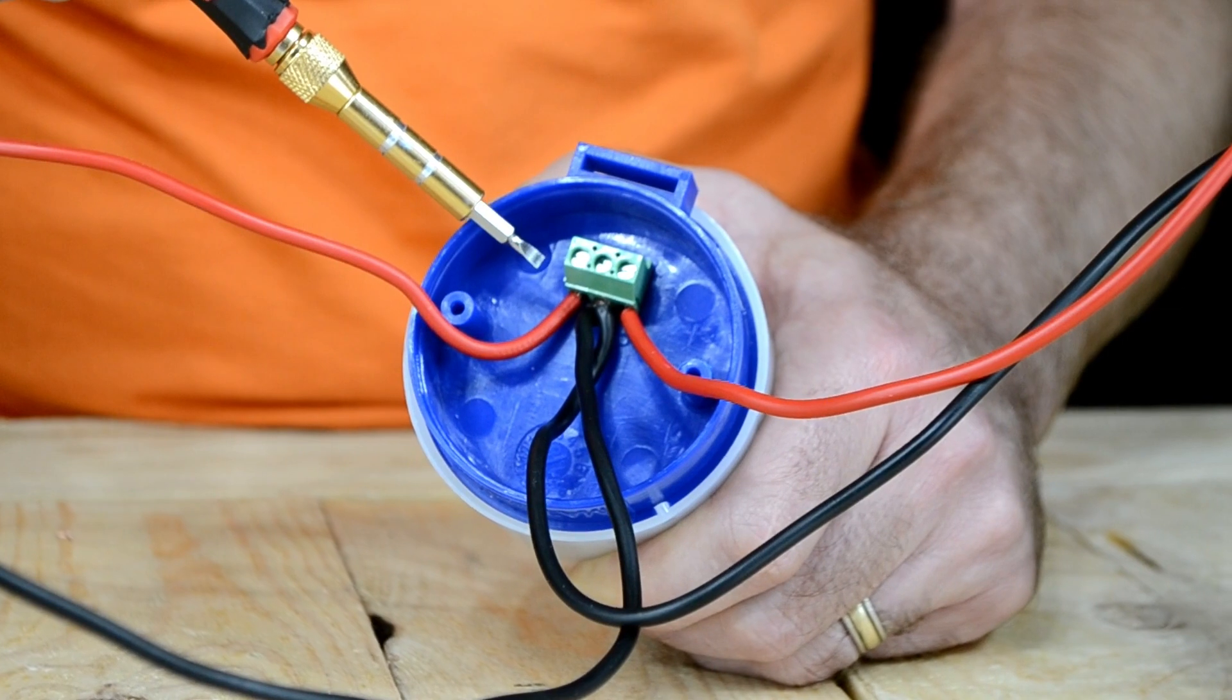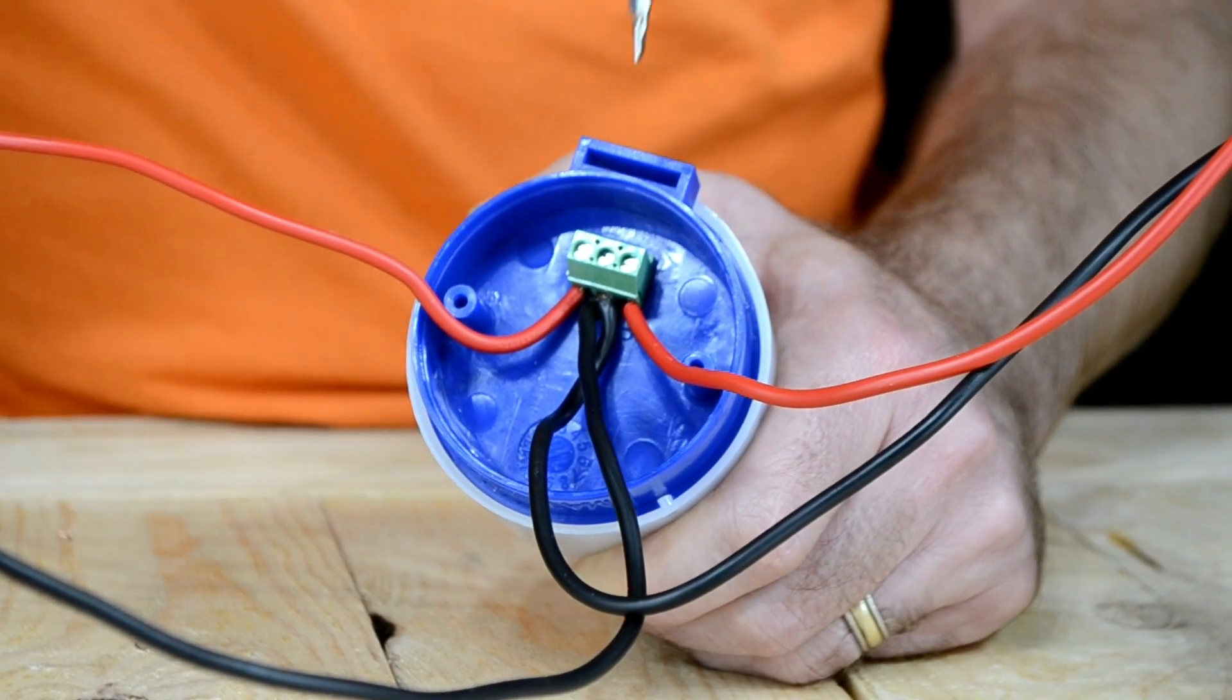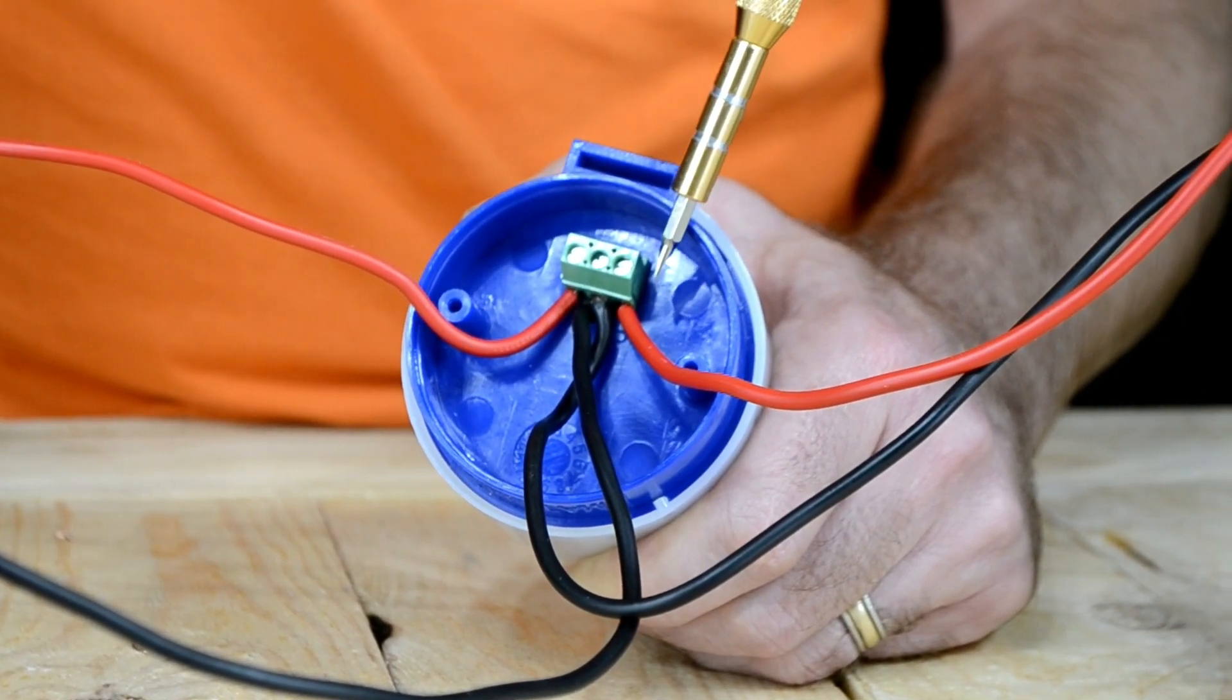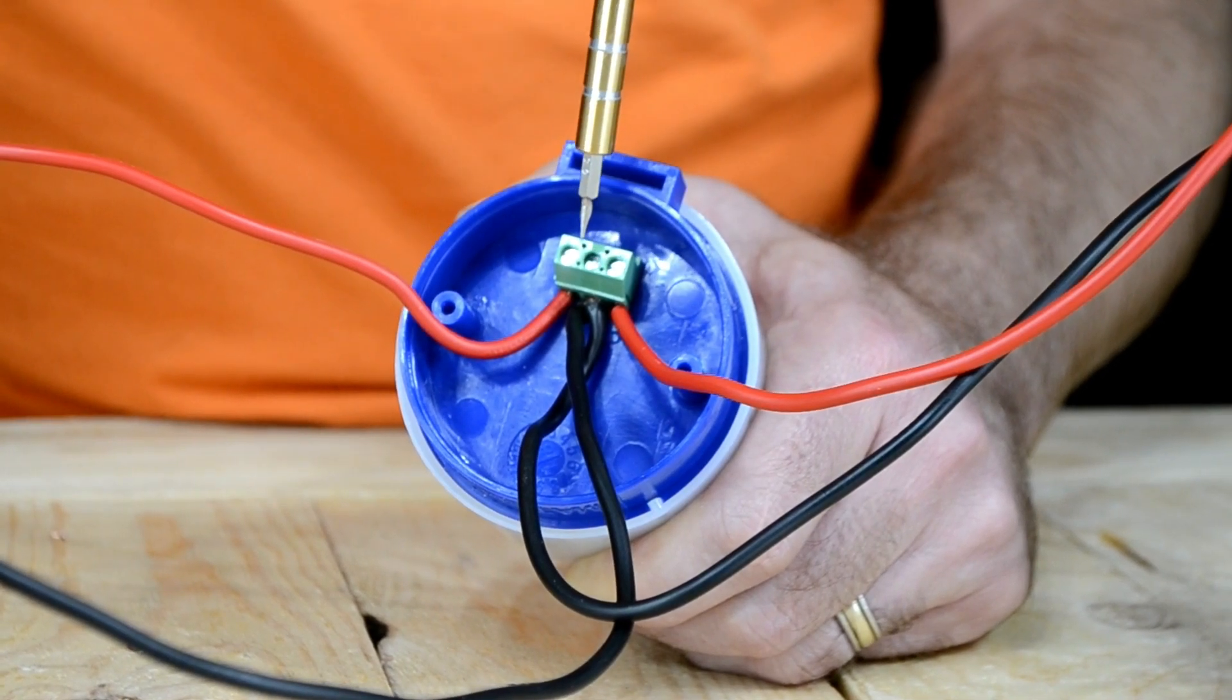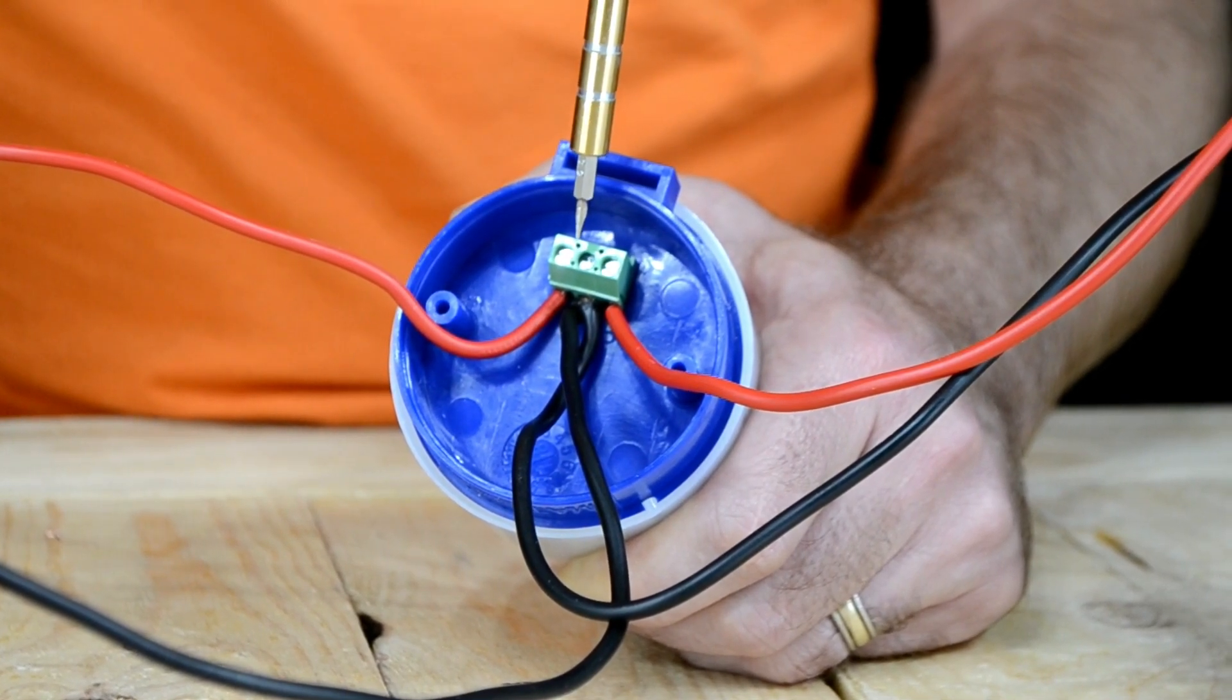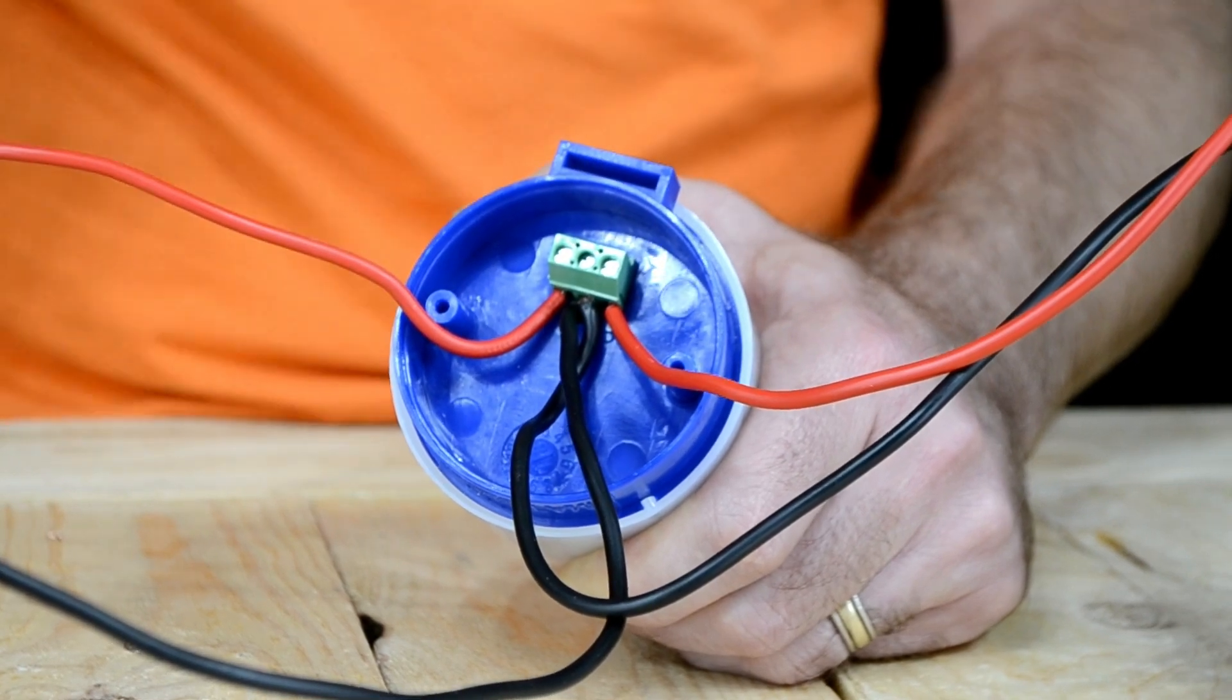So that's your load in on this terminal, which comes from the light switch. This is your load out, which goes to the light source. This is your neutral, which is the common shed.